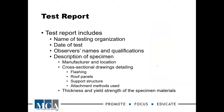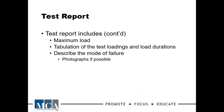The test result must include the name of the testing organization, the date of the test, the observer's names and qualifications. This is all standard ANSI stuff — description of the specimen, where and by whom it was manufactured, cross-sectional drawings to support the assembly, as well as what could be transmitted to a set of details to actually get that improvement implemented. Thickness and yield strength of the specimen materials are important to ensure materials used in this test are repeated in future implementations. The report also requires maximum load achieved, tabulation of test results and load durations, description of the mode of failure, and photographs.